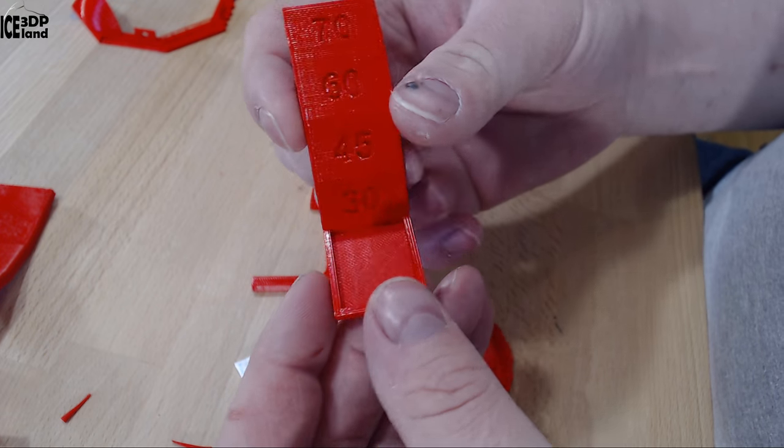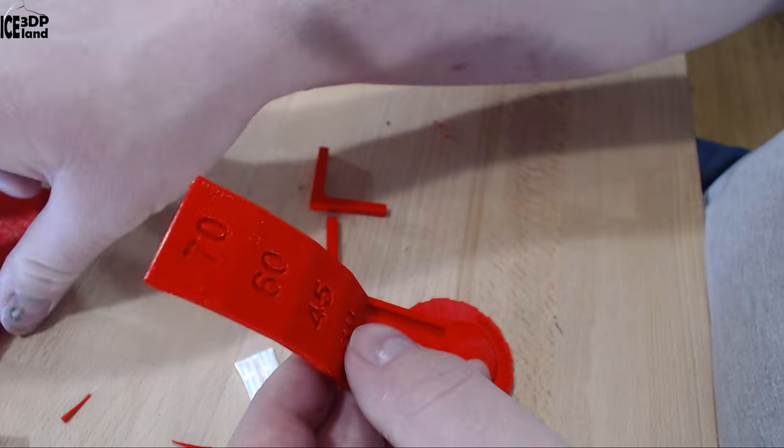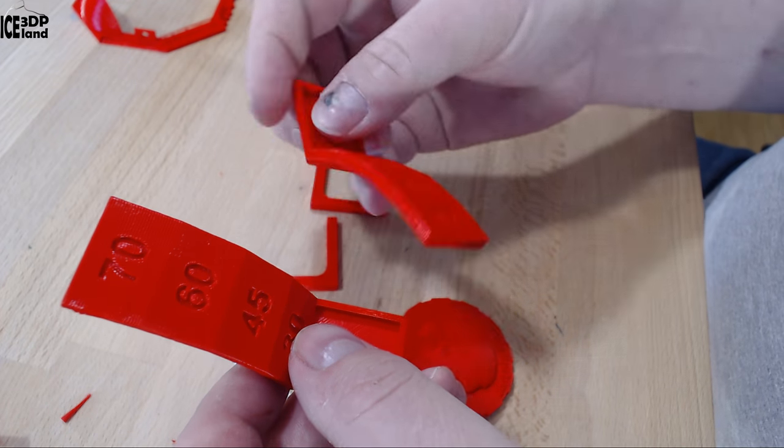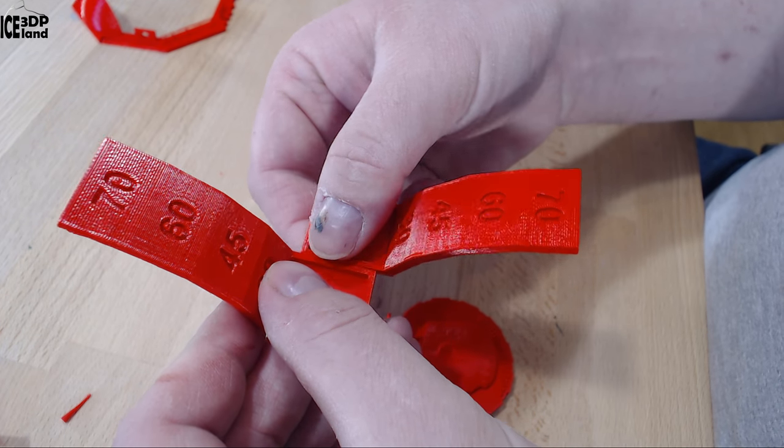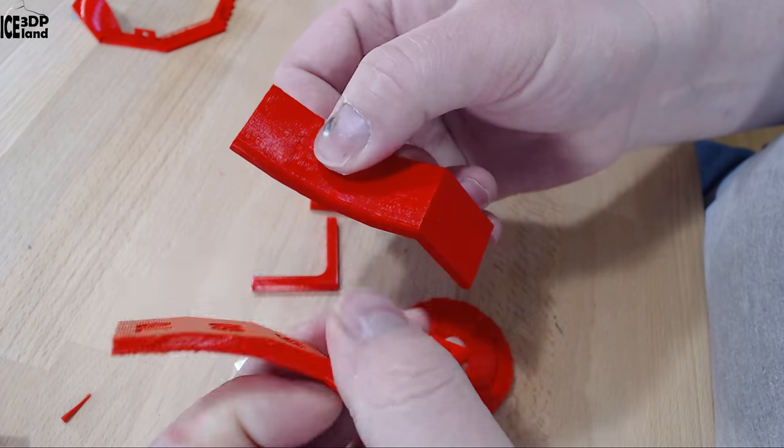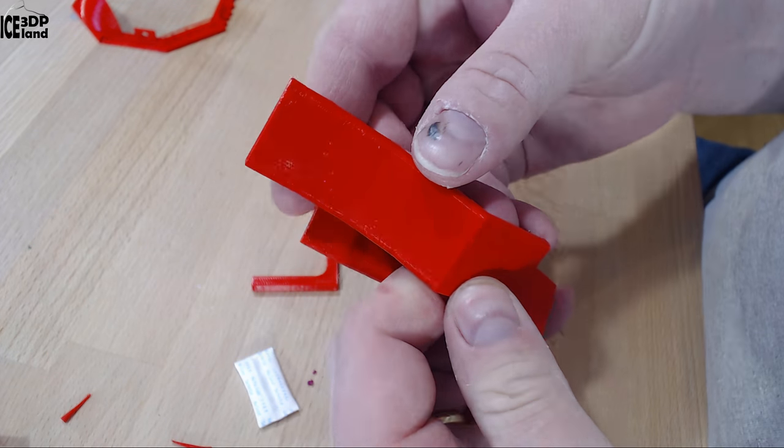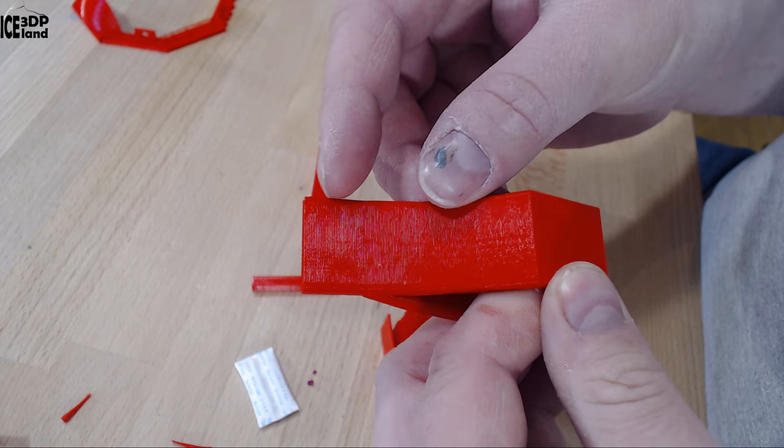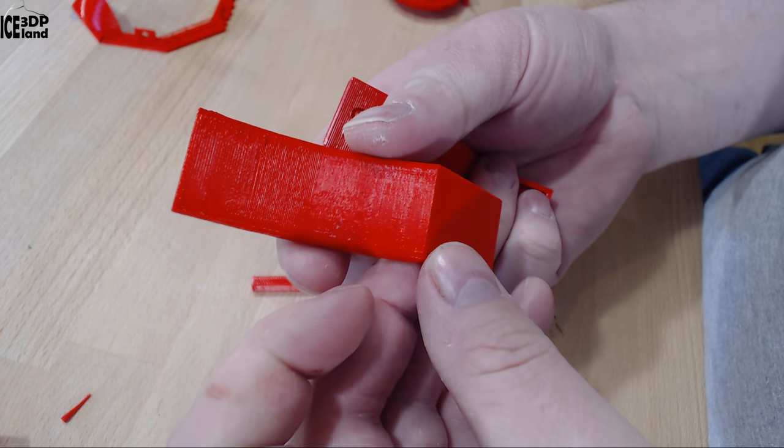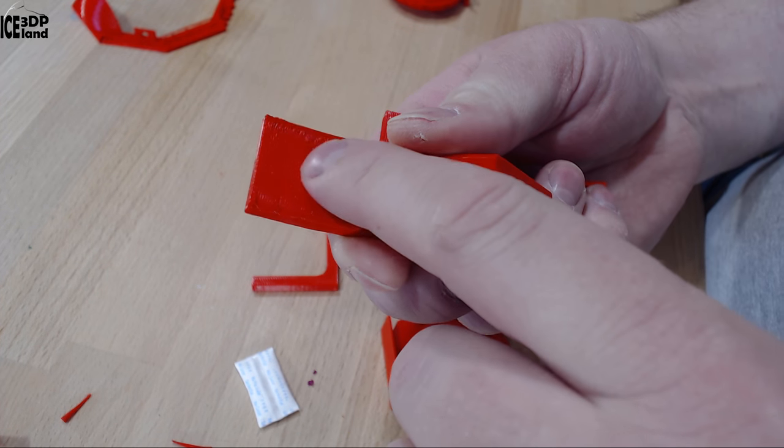I then printed out the overhang tests and I printed two of them. One facing towards the fan and one going away from the fan. And actually the one that was going away from the fan turned out to be a little bit better. There's a small defect here on the corner but on the one that was facing the fan there was a little bit more issues.